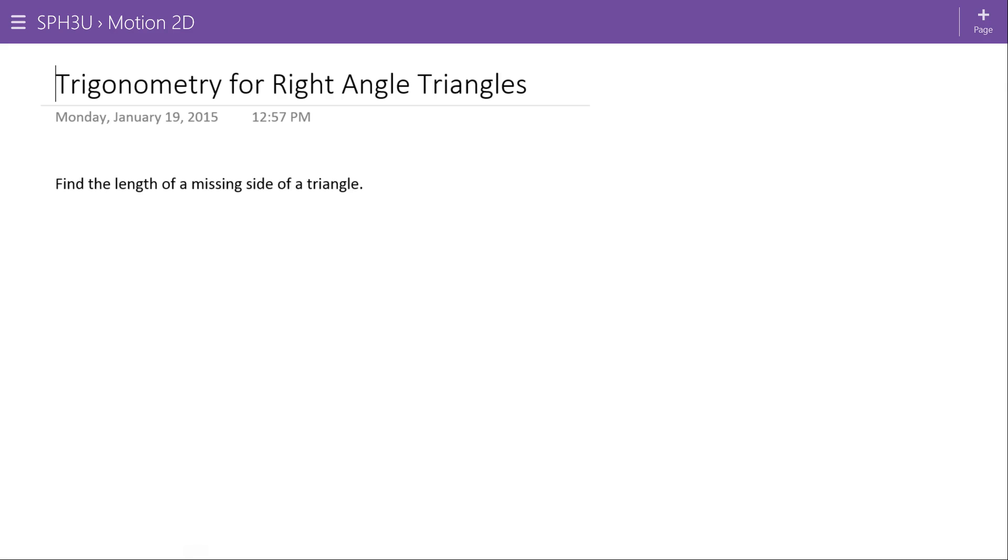Grade 10 math, I mean, but we'll just work through some things here. So first things first, find the length of the missing side of a triangle. In physics we can use the sine law and the cosine law just like in mathematics, but for right now at least we're only going to use right angle triangles.